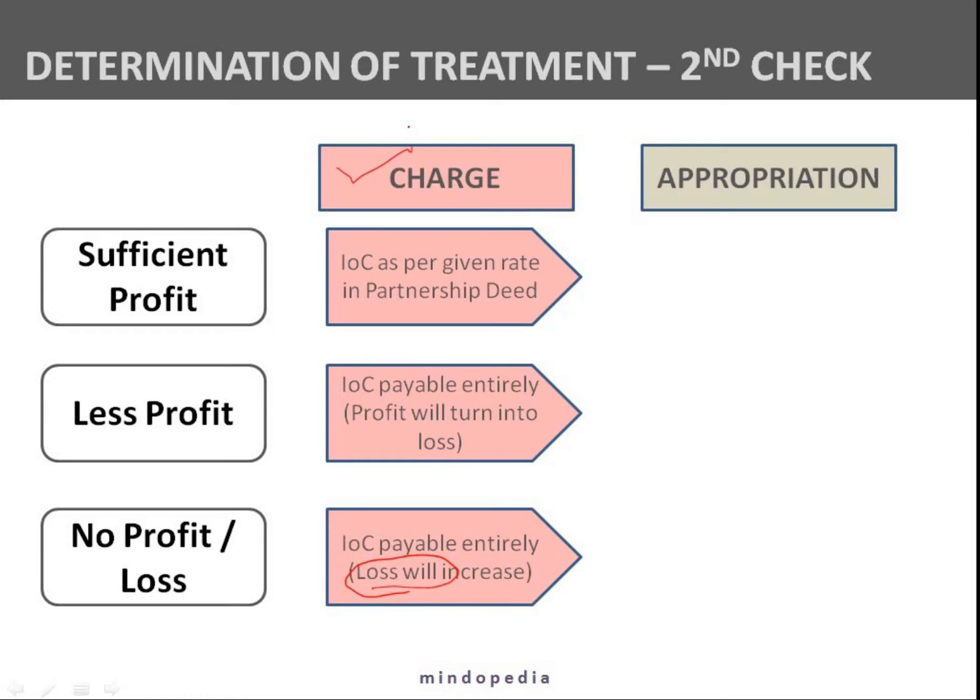So to simplify, in the case of charge, whatever the condition — whether there is sufficient profit, less profit, or no profit — you are supposed to give interest on capital to the partners at the rate given in the partnership deed. Now coming to case two, appropriation. If nothing is given in the question, then appropriation wins, and it is assumed that we have to solve the entire question as appropriation.